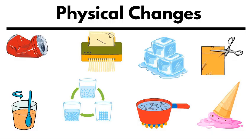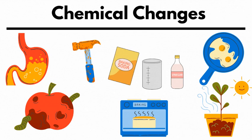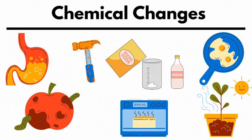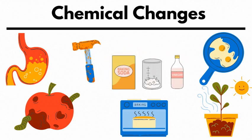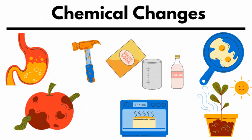In summary, physical changes involve alterations in the state or appearance of matter without changing its chemical composition. In contrast, chemical changes involve the formation of new substances with different properties due to changes in molecular composition.